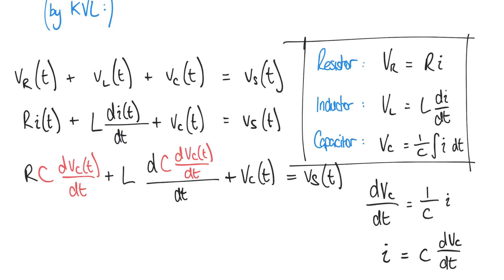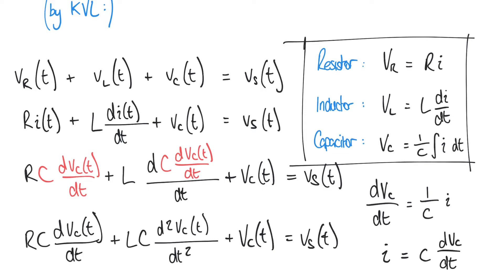Now we've made a mess with the second term — the L term — because we have a derivative of a derivative, but that's better written as a second derivative: d²VC(t)/dt². So notice that this equation is now a second order differential equation, and it's entirely in terms of the output VC(t) on the left hand side, with all functions in the time domain being VC(t), and on the right hand side everything is in terms of the input VS(t).